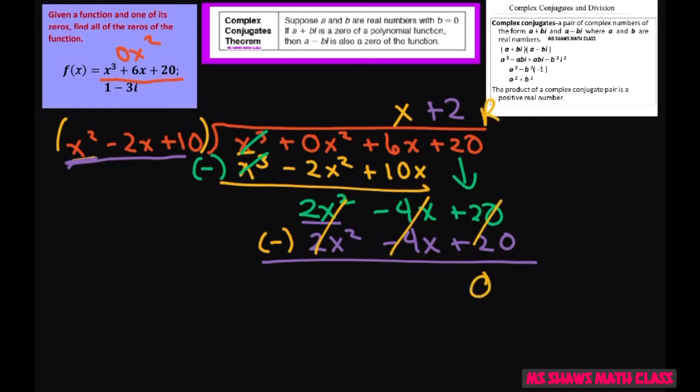Since we have a remainder of 0, this is a factor. If x plus 2 is a factor, then you solve for x, and you get x equals negative 2 is a zero.